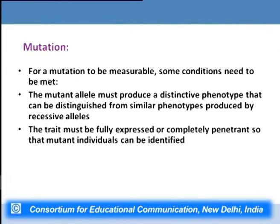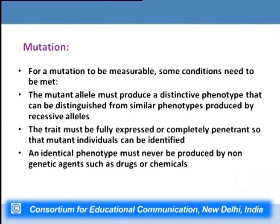Second, the trait must be fully expressed or completely penetrant so that mutant individuals can be identified. If an individual is harboring the mutant alleles, he or she should show the phenotype completely, otherwise we would not be able to determine whether the individual carries those mutant alleles. Third, an identical phenotype must never be produced by non-genetic agents such as drugs or chemicals; otherwise we cannot say whether the phenotype is due to a chemical agent or a mutant allele.